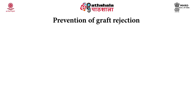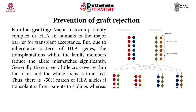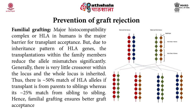How can we prevent the phenomenon of graft rejection? Various mechanisms are possible which can help to minimize graft rejection. For example, familial grafting: the major histocompatibility complex or HLA in humans is the major barrier for transplant acceptance, but due to the inheritance pattern of HLA genes, transplantations within family members reduce the allele mismatch significantly. There is 50% match of HLA alleles if a transplant is from parent to sibling, whereas it is 25% from sibling to sibling. Hence familial grafting ensures better graft acceptance.